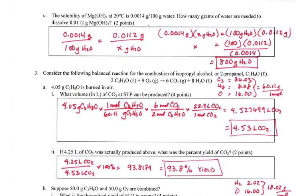Second page, we're starting here. The solubility of magnesium hydroxide at 20 degrees is 0.0014 grams per 100 grams of water. And that's how we talk about solubility. So how many grams of water are needed to dissolve 0.0112 grams of magnesium hydroxide? That is just a proportion. So we just set up a proportion. If it takes this many grams can go into 100 milliliters of water, then this many grams would need how many grams of water?